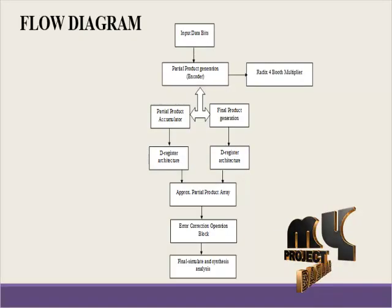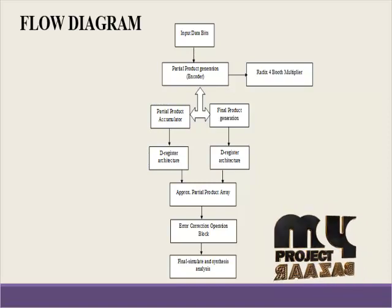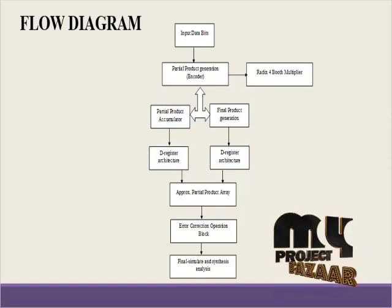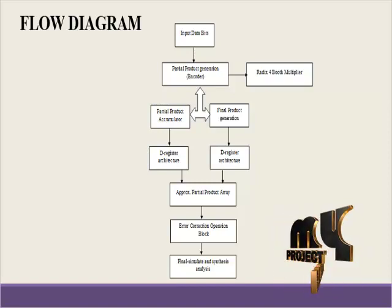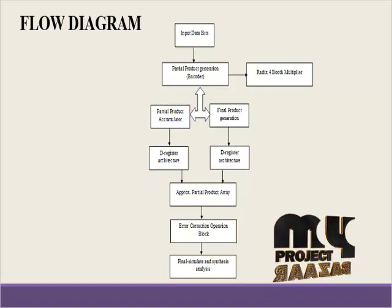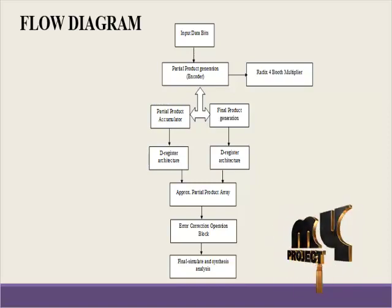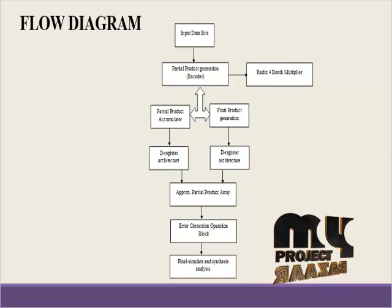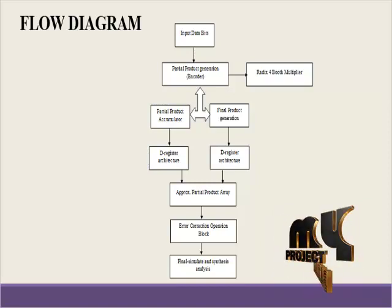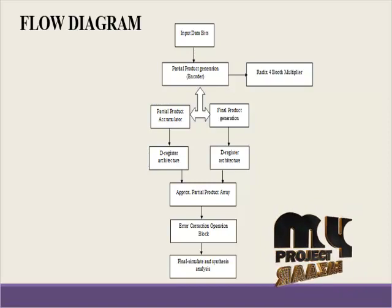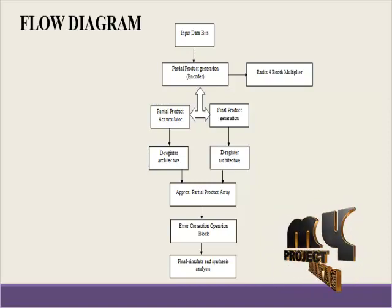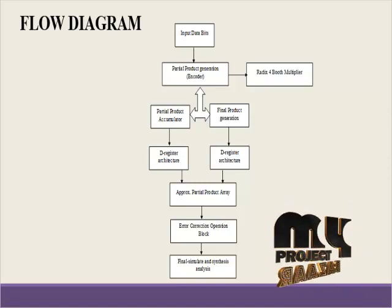Now we are going to discuss our product flow diagram. In our process, we give 12-bit input data bits and then proceed to the encoding process. We determine the three parts of the booth multiplier. First is partial product generation, which means the encoding process — the partial product encoding having the Radix-4 booth multipliers.